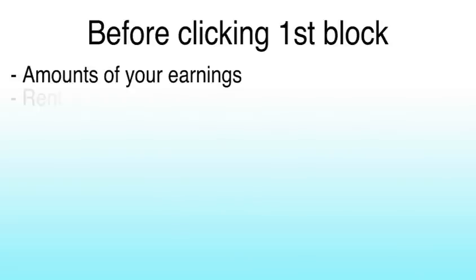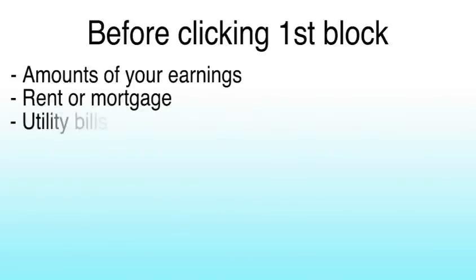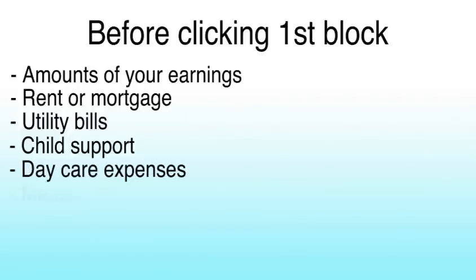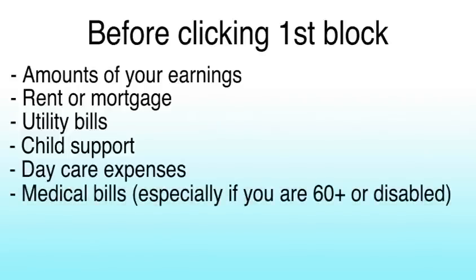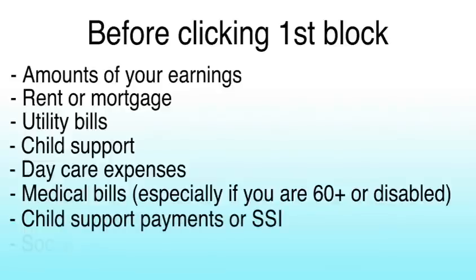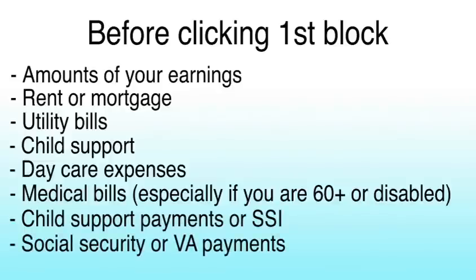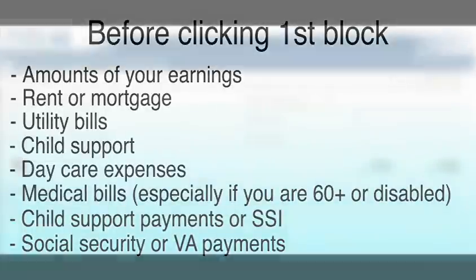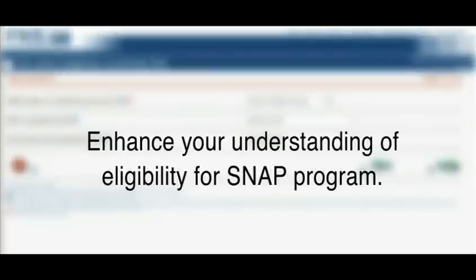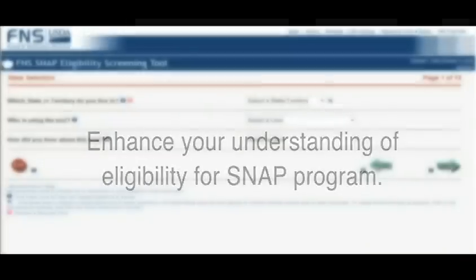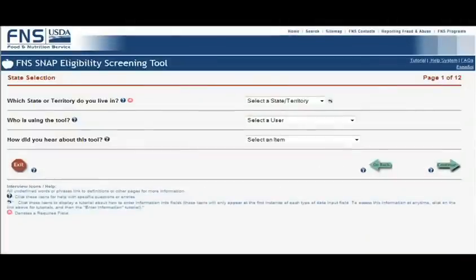Before you click the first block, you may want to look up the amounts of your earnings, rent or mortgage, utility bills, child support, daycare expenses, medical bills — especially if you are 60 or older or disabled — child support payments or SSI, Social Security, or VA payments. Remember, this is not the actual SNAP application. This form is designed to enhance your understanding of how the State of Ohio considers eligibility for the SNAP program and to see if it's worthwhile for you to apply.